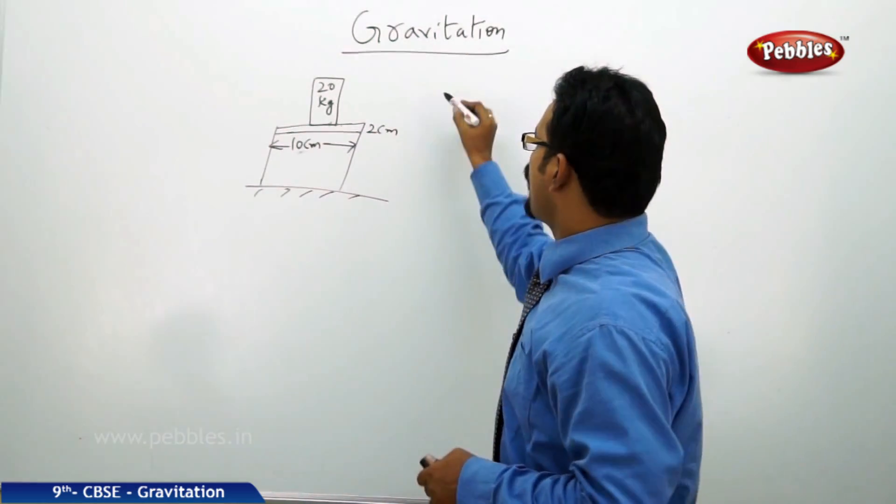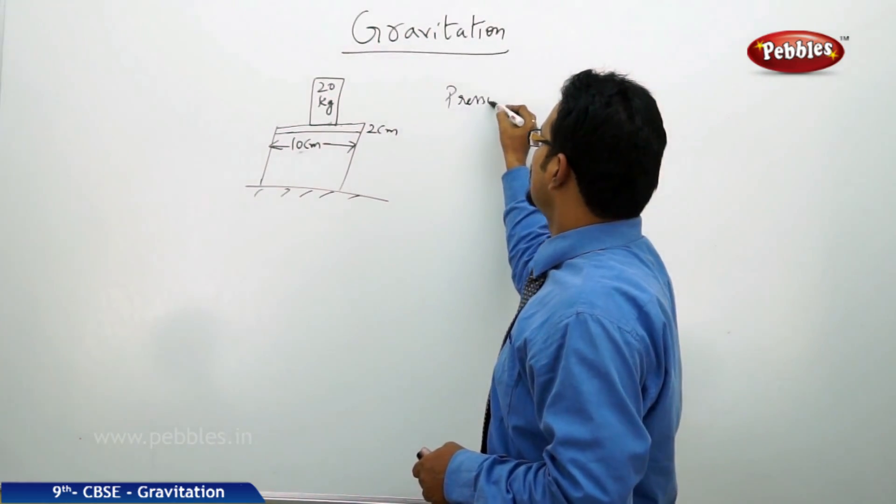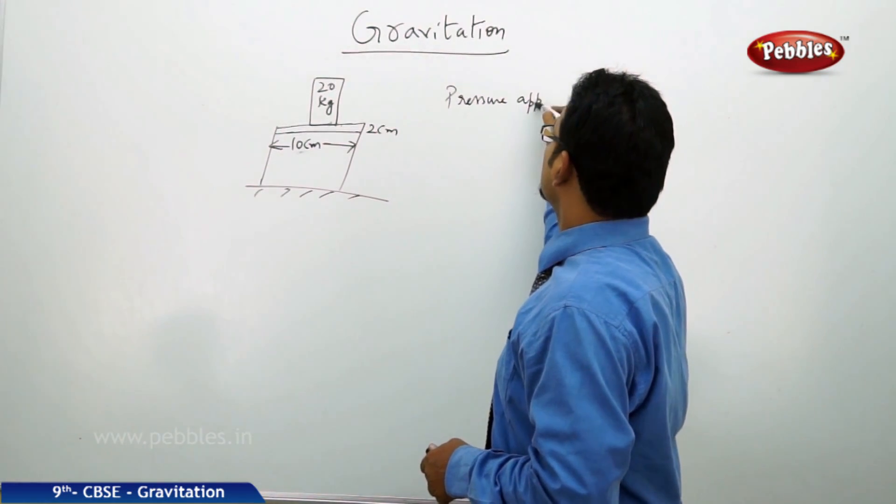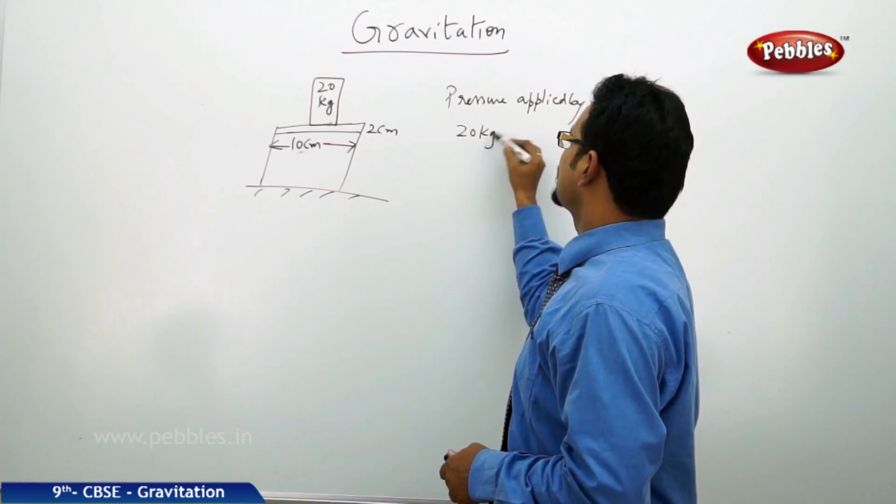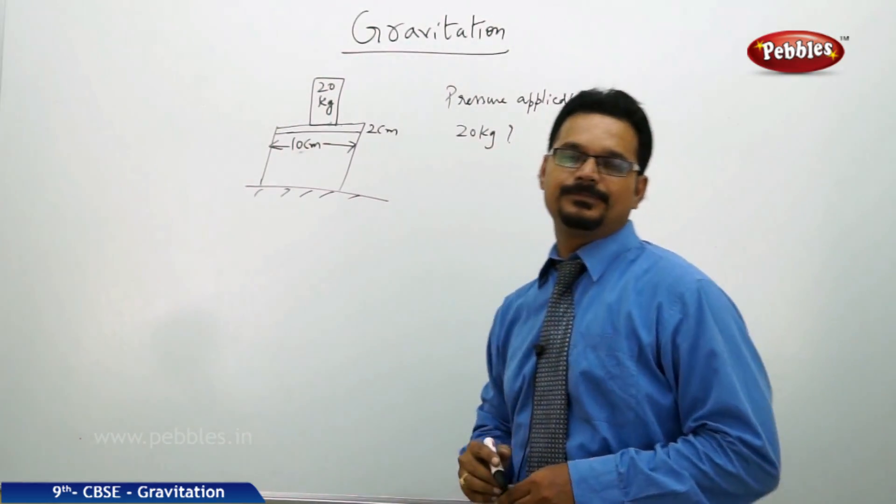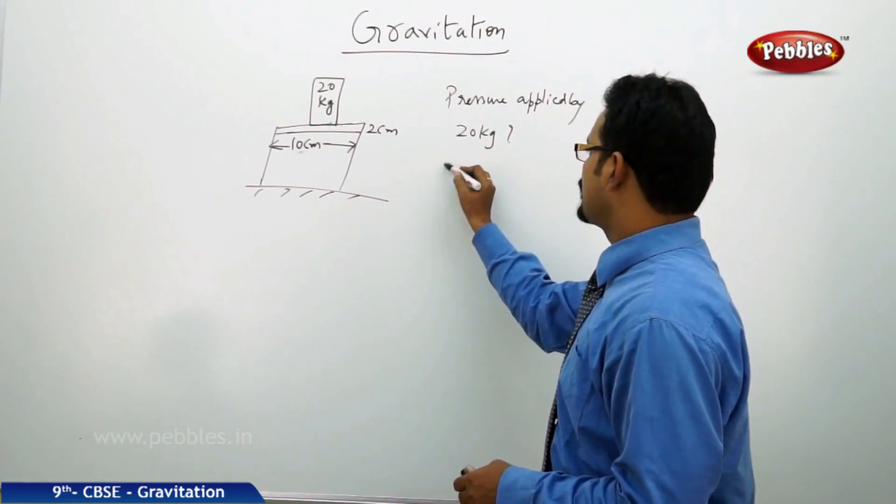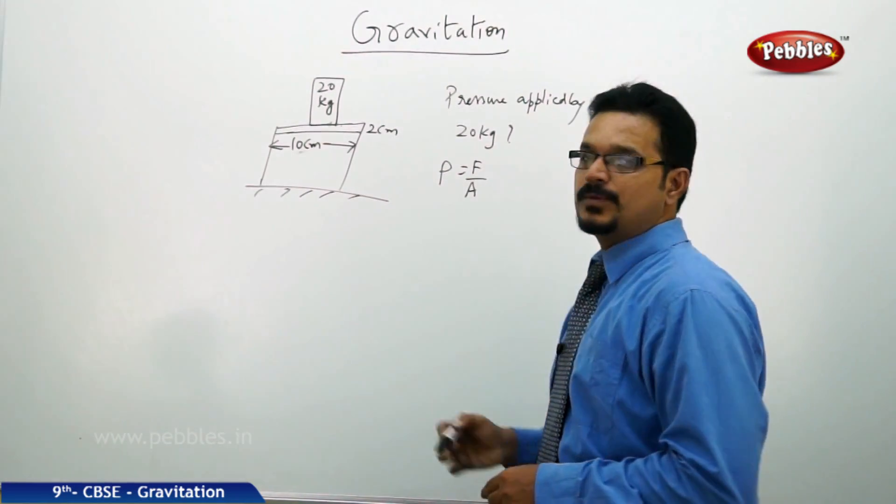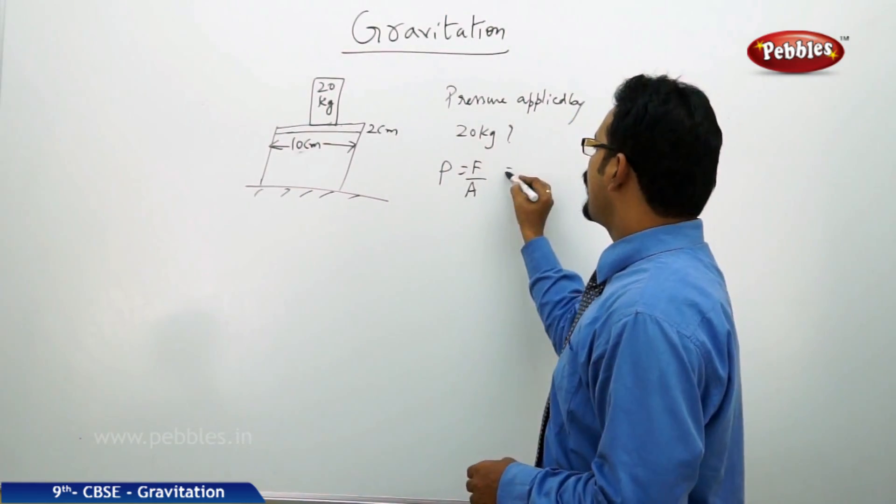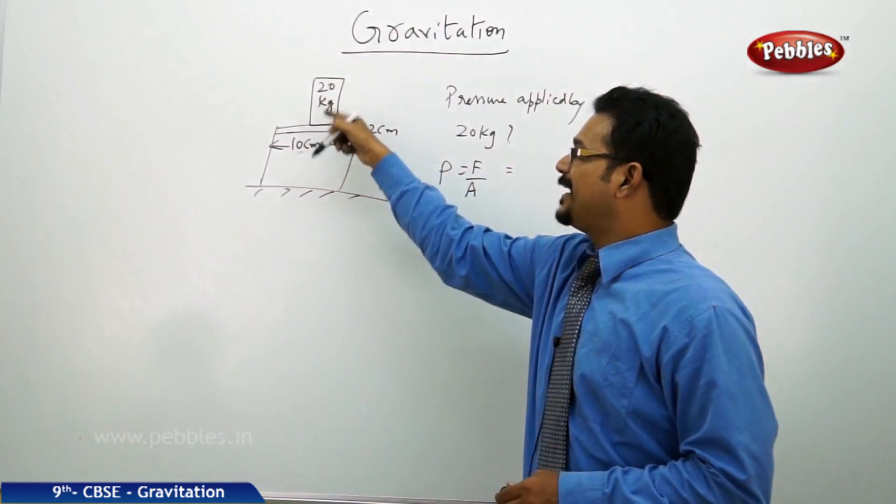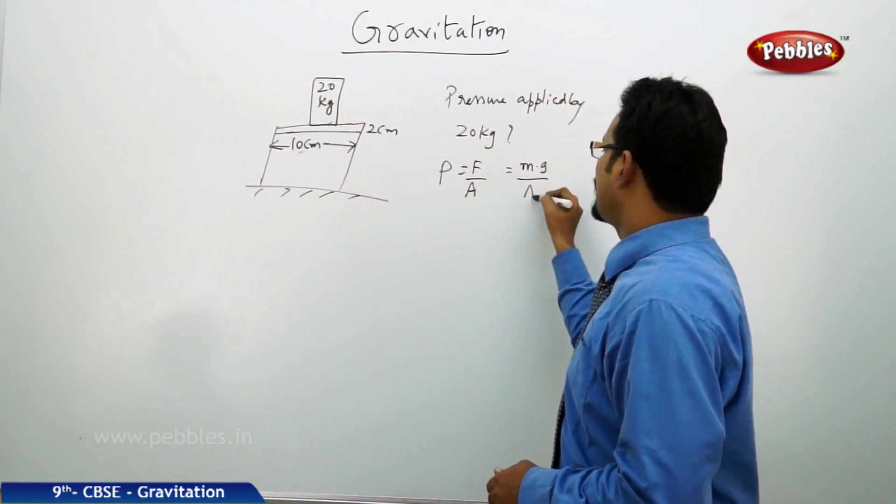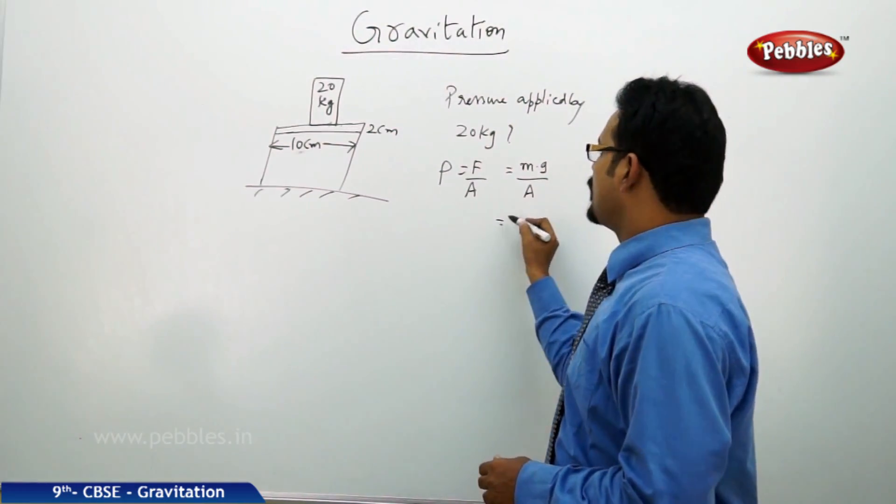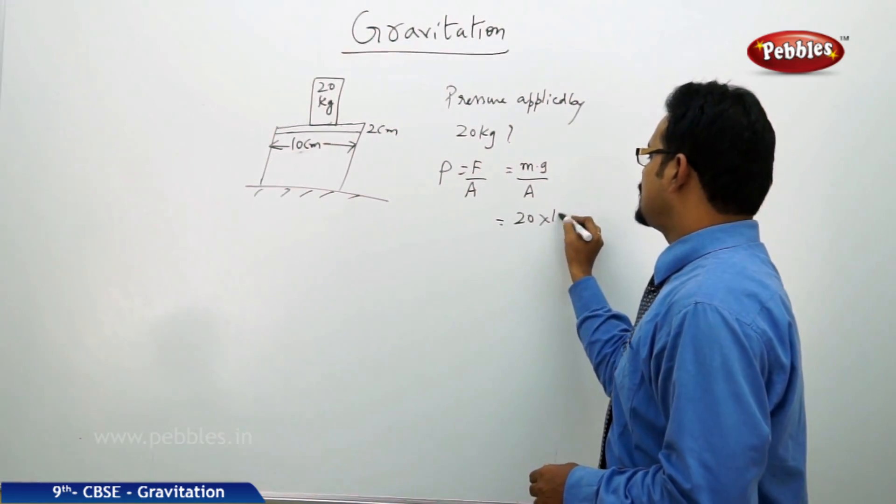If I ask the question, what is the pressure applied by the 20 kg mass on the table? Yes, start with the formula P = F/A, force per unit area. But this force is nothing but the weight of the block, so the weight formula is M × G divided by A. So mass is 20 kg, G is 10.